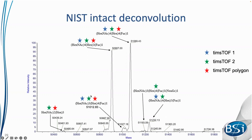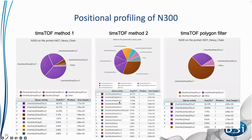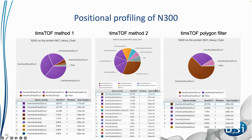The results are highlighted with green stars for TIMSTOF Method 2. In the positional profiling data across methods, the majority of the most abundant glycans also match the most abundant peaks at the intact mass level. One particular glycan shown in brown appears more abundant in the last two TIMSTOF methods and less abundant in the first — we're still investigating why, and it hasn't been detectable at the intact level.